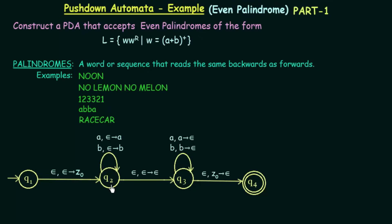Then we come to state Q2. In Q2, we can receive either input A or input B. If we get input A, we don't pop anything but we push that A onto the stack. Similarly, if we get input B, we don't pop anything but we push that B directly onto the stack. That is what we do in state Q2.